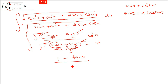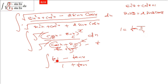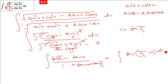Alternatively, divide numerator and denominator by cosx: (1 − tanx)/(1 + tanx). Recall that tan(π/4) = 1, so this is (tan(π/4) − tanx)/(1 + tan(π/4)·tanx) = tan(π/4 − x). So the integral becomes ∫tan(π/4 − x)dx, which gives ln|sec(π/4 − x)| divided by −1 (chain rule).